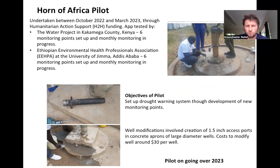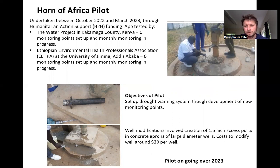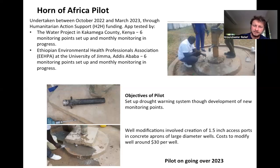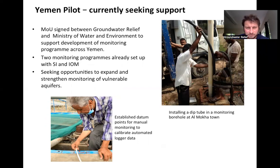Between October and March this year, we've also been carrying out a pilot within the Horn of Africa with Humanitarian Action Support funding. We set up a pilot program in Kenya with The Water Project, and a pilot in Addis with the Ethiopian Environmental Health Professionals Association. These monitoring points are currently being carried out once a month and the pilot is ongoing. One key take-home was that setting up monitoring points in Kenya required installing new access ports within wells — but at a cost of only around $30 per well, it doesn't need to be an expensive process. We now have a memorandum of understanding signed with the Ministry of Water and Environment in Yemen to support monitoring across the country, and have set up two monitoring programs with Solidarités International and the International Organization for Migration.